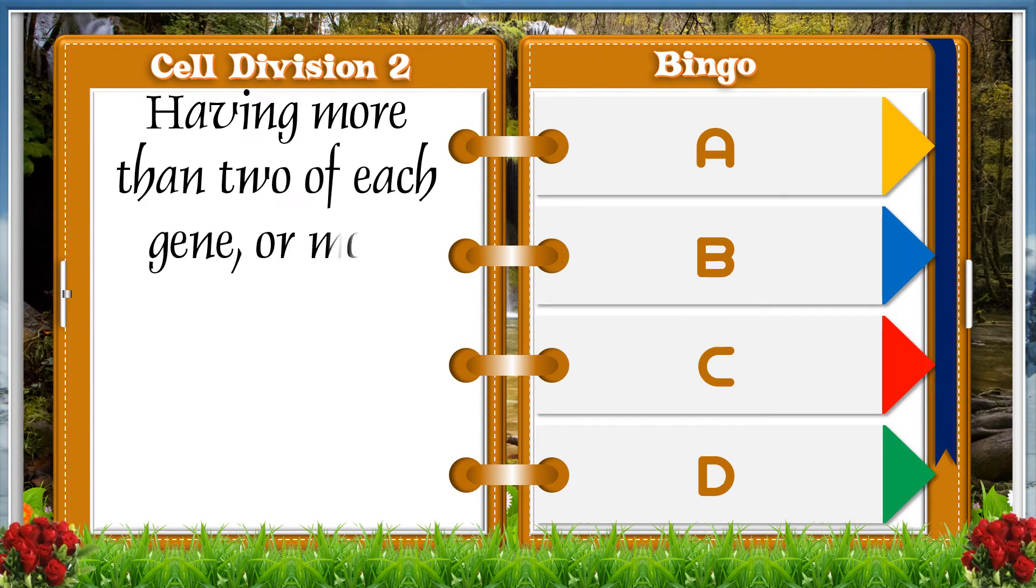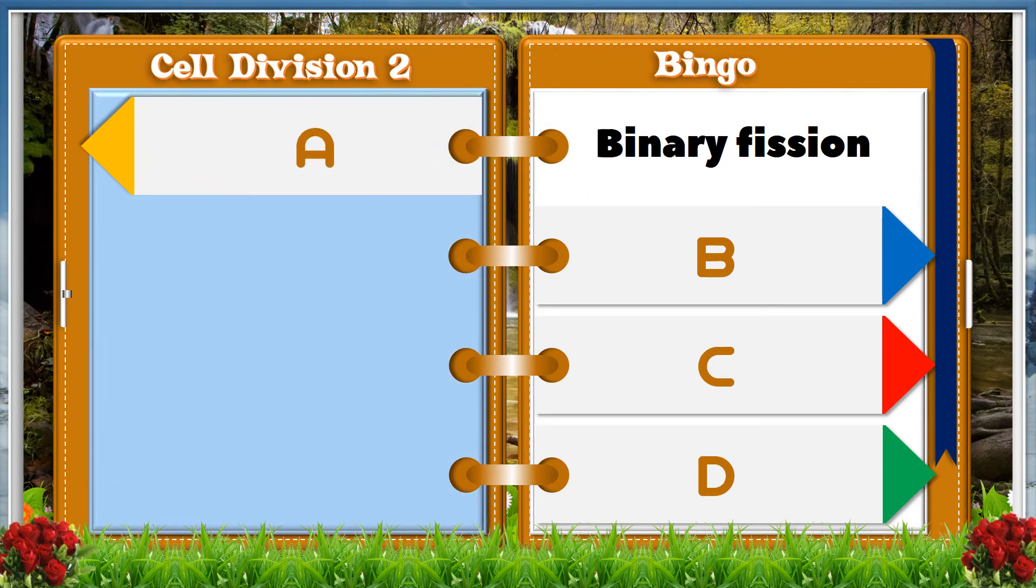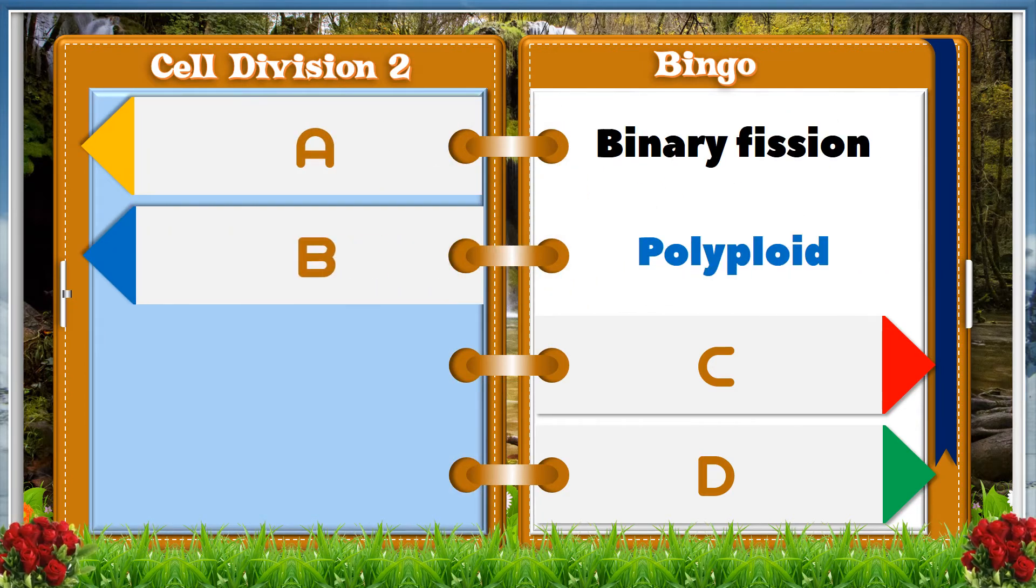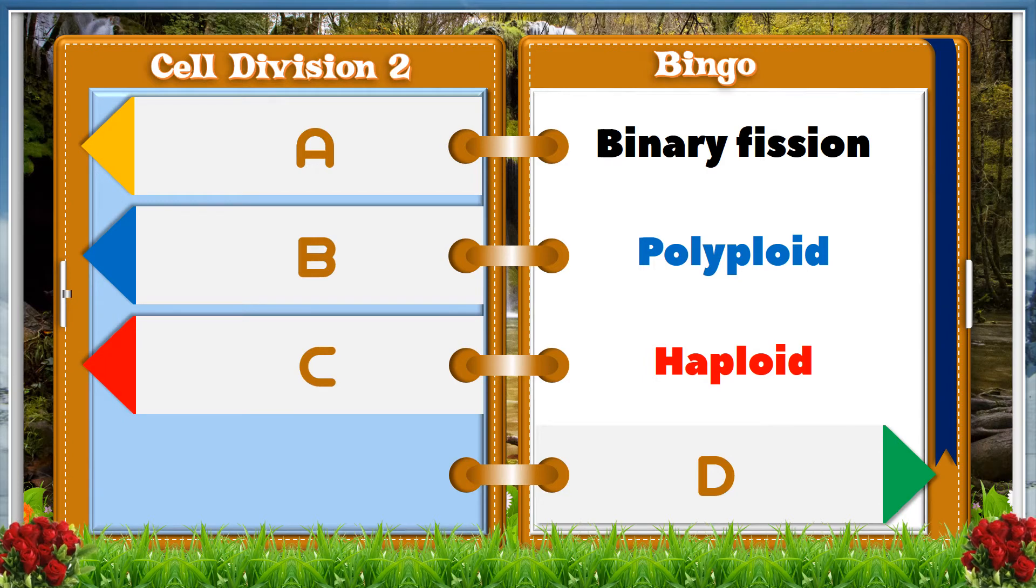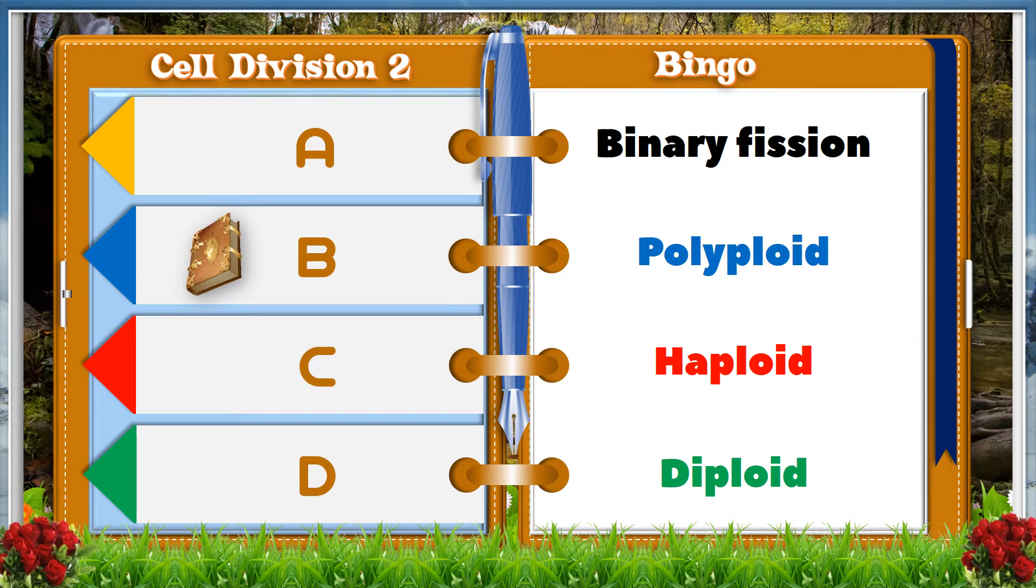Having more than two of each gene or more than two sets of chromosomes. For example, 3N triploid or 4N tetraploid. A: binary fission, B: polyploid, C: haploid, D: diploid. The answer is B, polyploid.